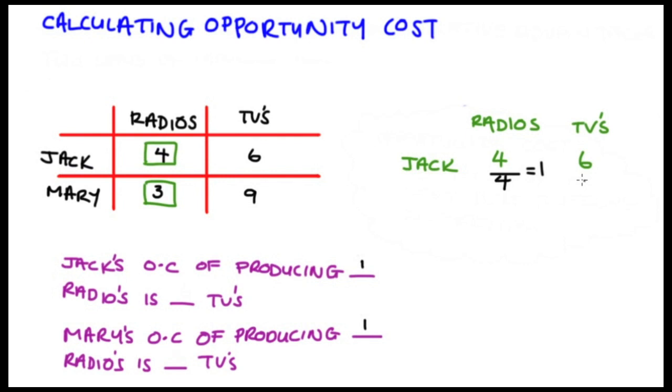So four divided by four is equal to one. But in order for this to be a legitimate operation, in order to preserve the ratio of how many TVs Jack is giving up when he's making this one radio, I also have to divide the other side by four. So six divided by four, which is 3/2, which is 1.5. So now I have Jack's opportunity cost just in terms of one radio—that's 1.5 TVs.